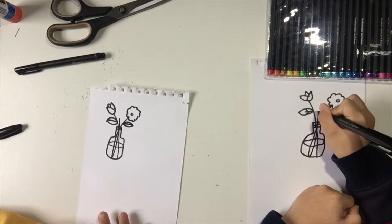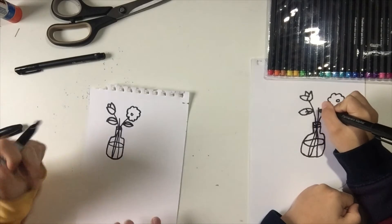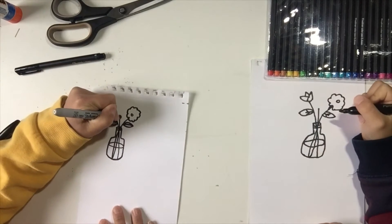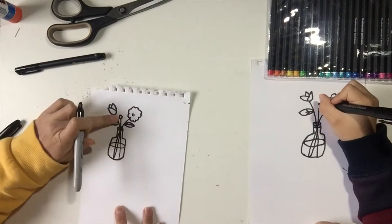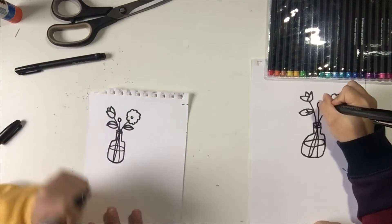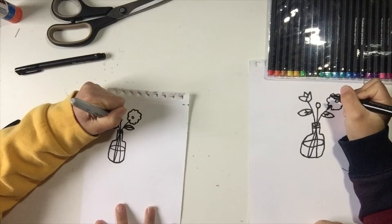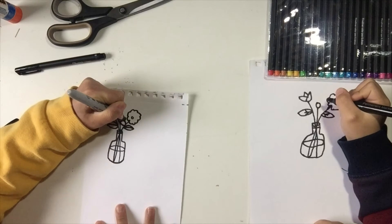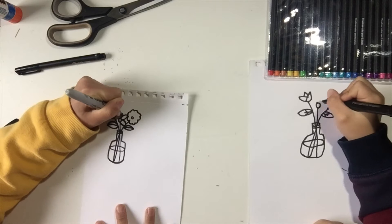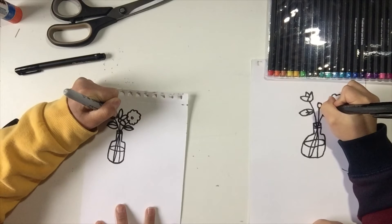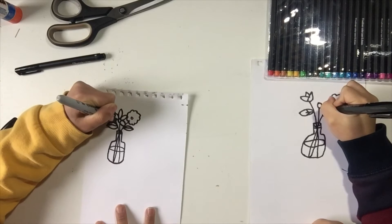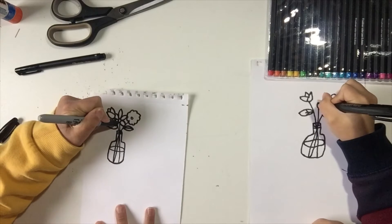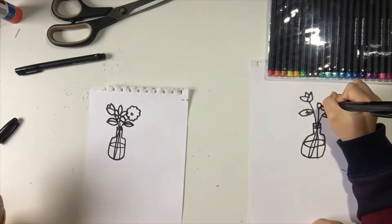And remember it doesn't have to be exactly where I put it. Okay, this one we're going to try to make a daisy. So a circle attached to the stem and then some lines that will make leaves or petals. And you may not be able to see some of them because they could be under the other leaves and petals.